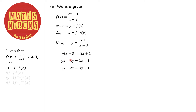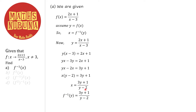We get yx - 2x = 3y + 1. Factor out x: x(y-2) = 3y+1, so x = (3y+1)/(y-2). Since x = f⁻¹(y), we have f⁻¹(y) = (3y+1)/(y-2). Converting all y's to x, we get f⁻¹(x) = (3x+1)/(x-2).